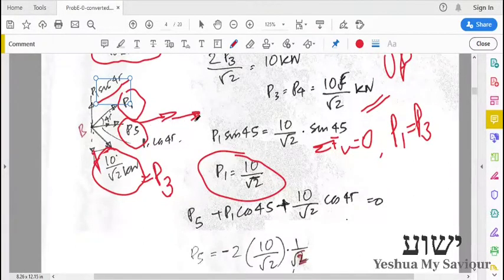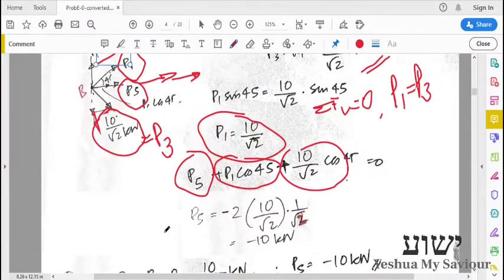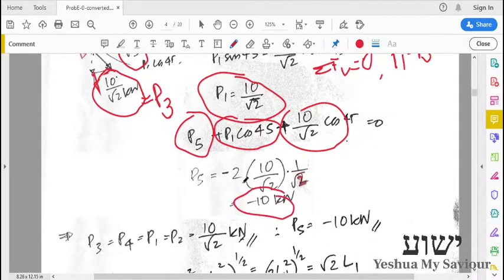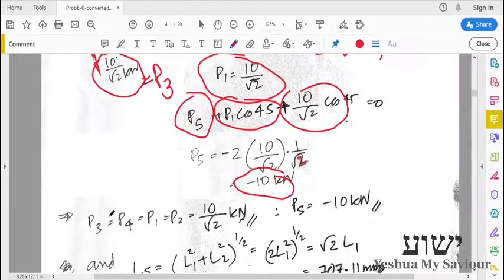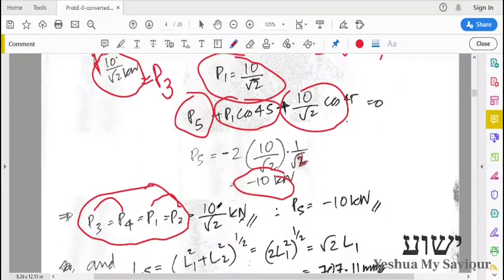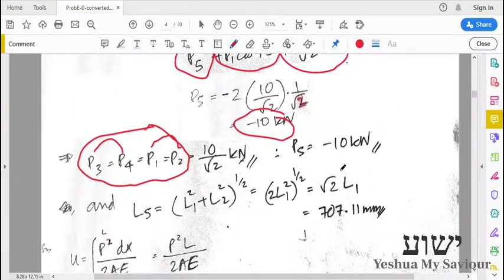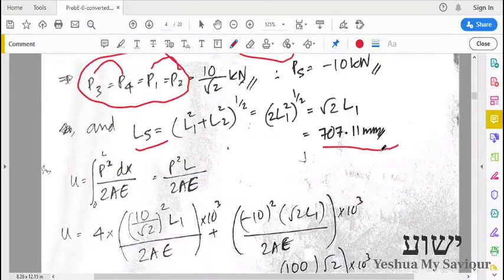Next, in this direction we have all the forces in the same direction: P5, P1 cos 45°, and P3 cos 45°. From this we will get P5 = -10. We have found all the forces. P1 and P2 are the same, P3 and P4 are the same, all equal to 10/√2. P5 is -10 kilonewtons. The length of member 5 is 500√2, which is 707.11 millimeters.